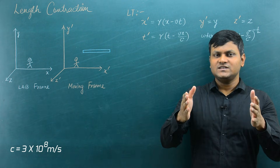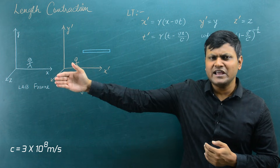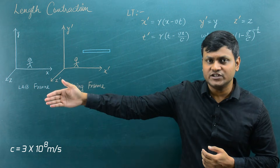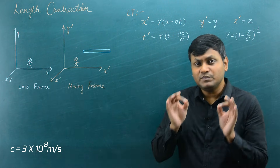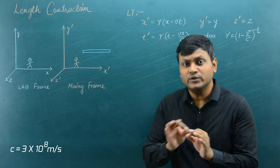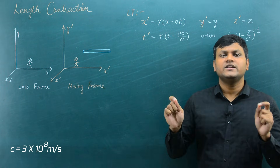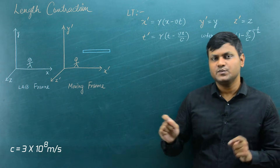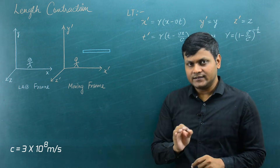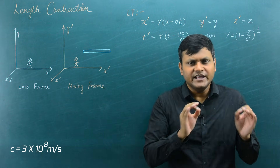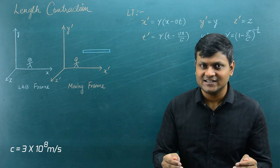Two inertial observers — myself and somebody traveling at very high velocities — both of us will measure the speed of light to be the same, that is C, that is 3 × 10^8 meters per second. This simple fact about the nature of our universe has certain consequences.